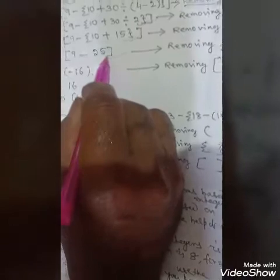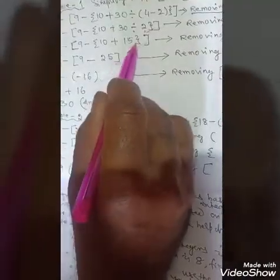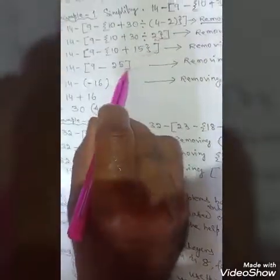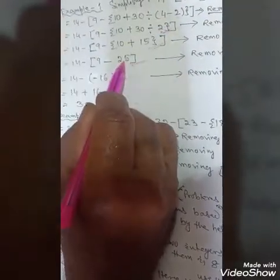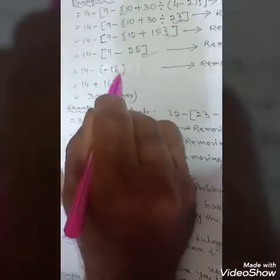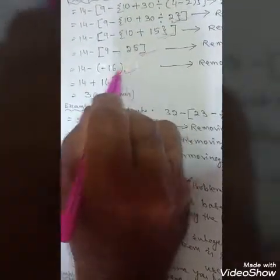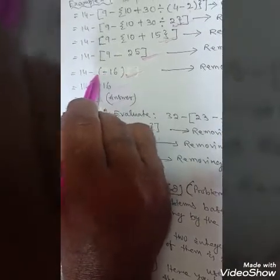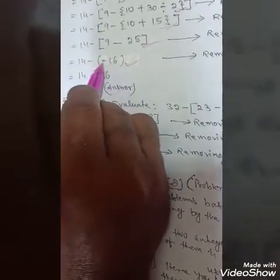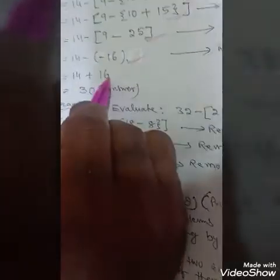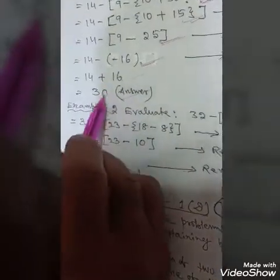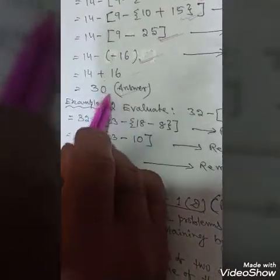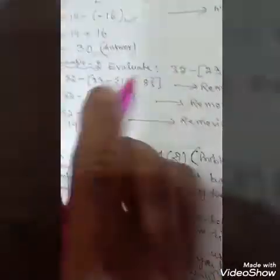Remove the curly bracket: 10 plus 15 equals 25. Then simplify the square bracket: 9 minus 25 equals minus 16. So 14 minus minus 16 — minus multiplied by minus equals plus — giving 14 plus 16 equals 30. The answer is 30.